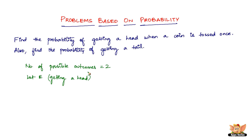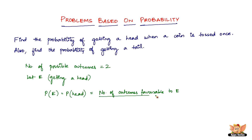The number of favorable outcomes to E is one. Therefore, P(E) — that is, the probability of getting a head — is the number of outcomes favorable to E divided by the number of all possible outcomes.